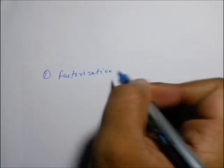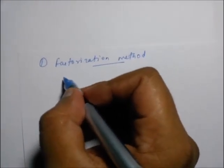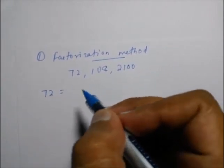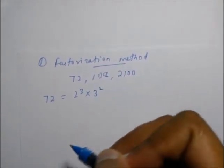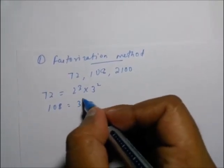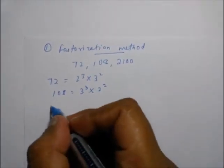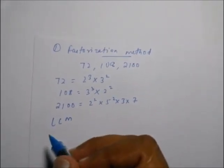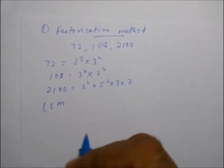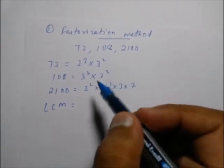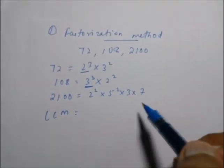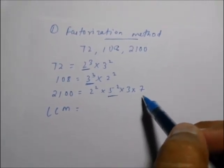Let's take an example using the factorization method first. Let's take three numbers: 72, 108, and 2100. Each number is broken down into its prime factors. Using the factorization method, we consider the product of the highest power of all the factors. The highest power of 2 is 3, the highest power of 3 is 3, the highest power of 5 is 2, and the highest power of 7 is 1.